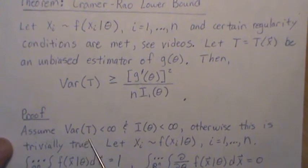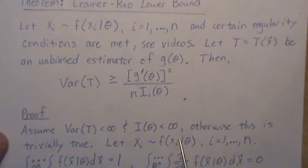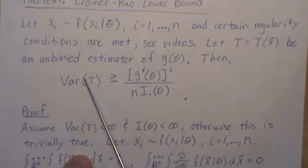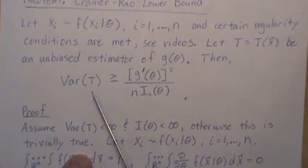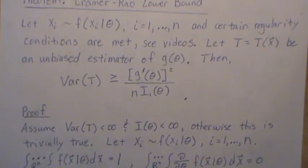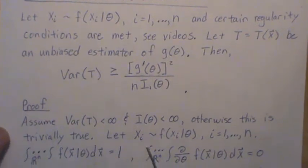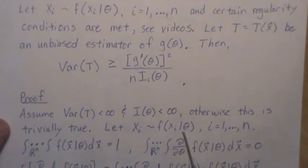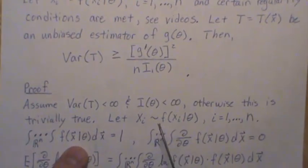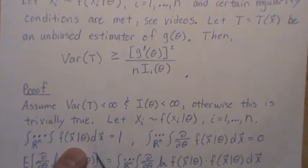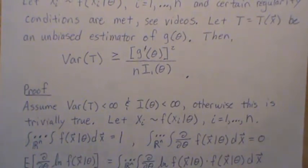So here's the proof. First, we're going to assume that the variance of T and the Fisher information are finite. Otherwise, it's trivially true, right? If this is infinity, well, it's always bigger than whatever this is. And if the Fisher information is infinite, then this number is zero. Well, the variance is always greater than or equal to zero. So it becomes trivially true. So we're going to assume they're finite.